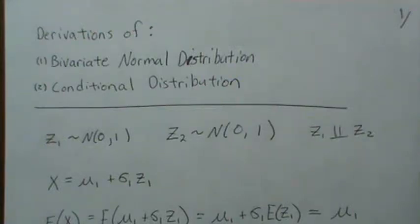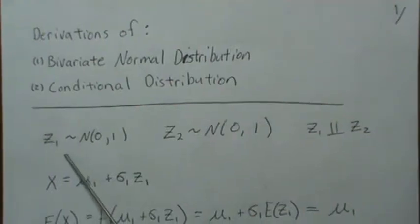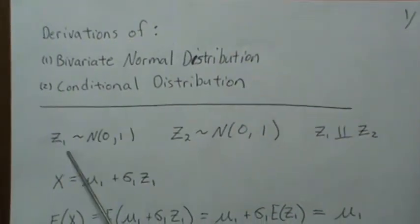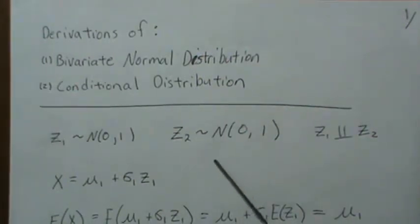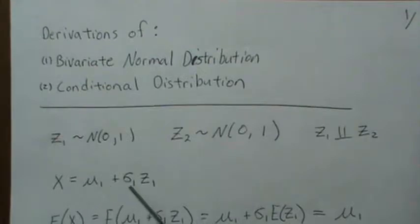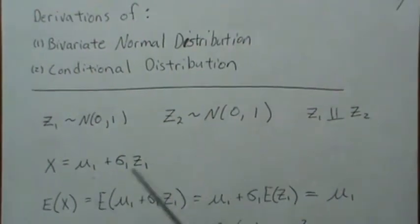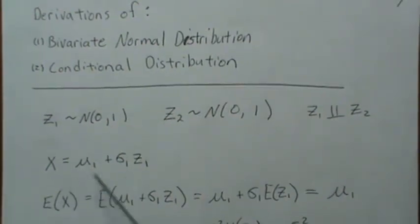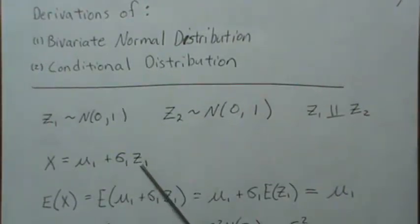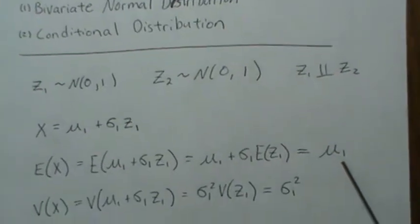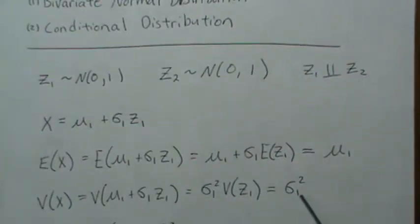In this video, we're going to derive the bivariate normal and the conditional bivariate normal. We have two normally distributed variables: z1 is normal with mean zero and variance one, and z2 is also a standard normal random variable. They're independent. We let x equal mu1 plus sigma1 times z1, so x is normally distributed as a linear combination of normal variables, with mean mu1 and variance sigma1 squared.